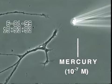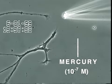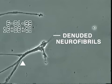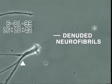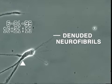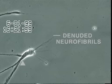Over the next 30 minutes, the neurite membrane underwent rapid degeneration, leaving behind the denuded neurofibrils seen here. In contrast, other heavy metals added at this same concentration, such as aluminum, lead, cadmium, and manganese, did not produce this effect.